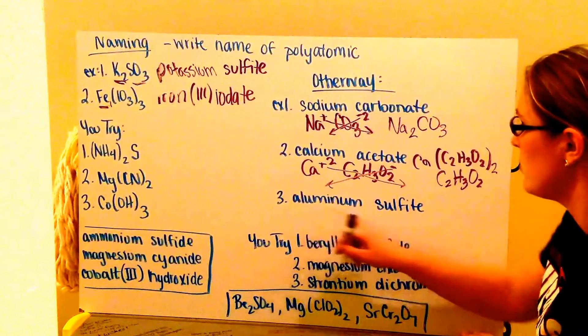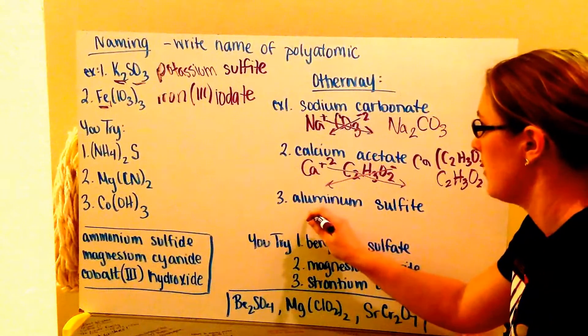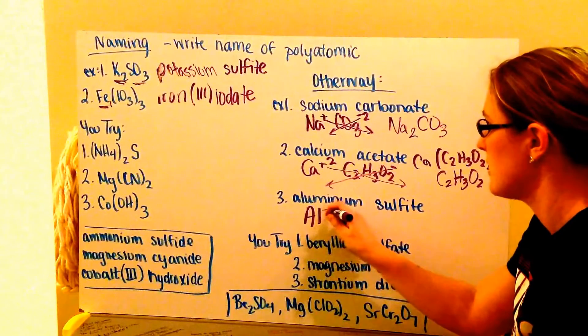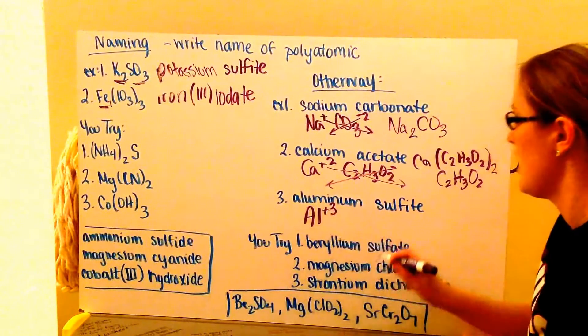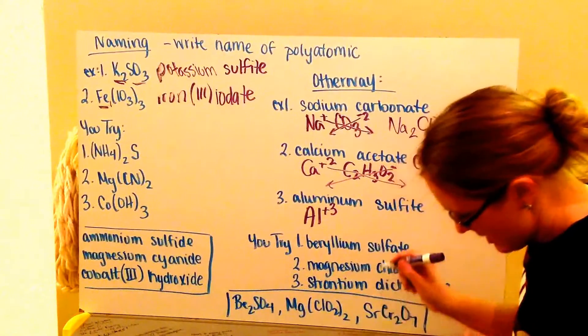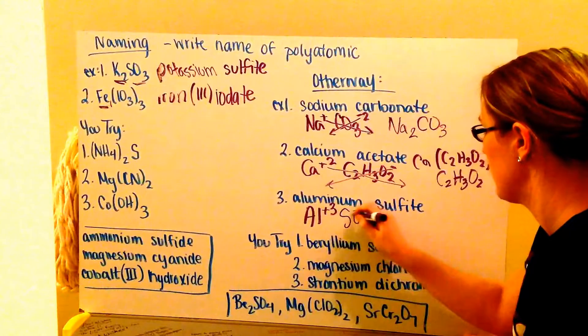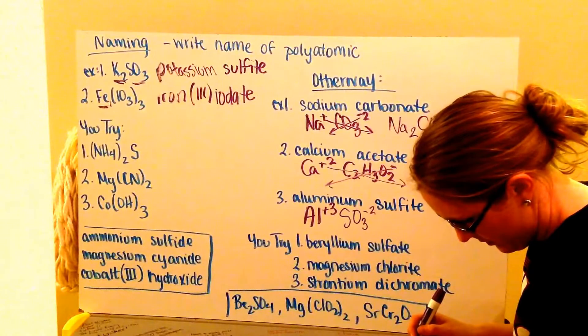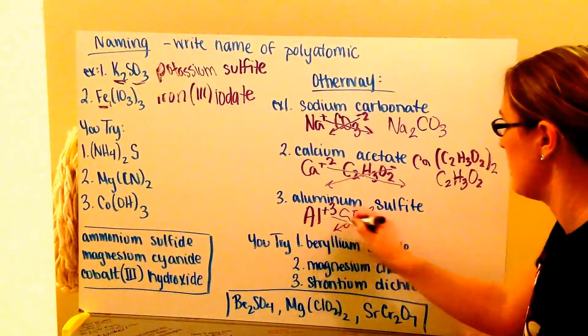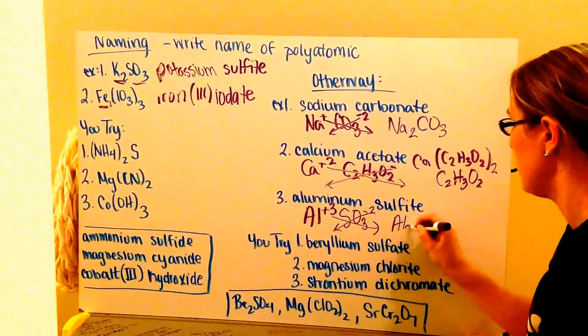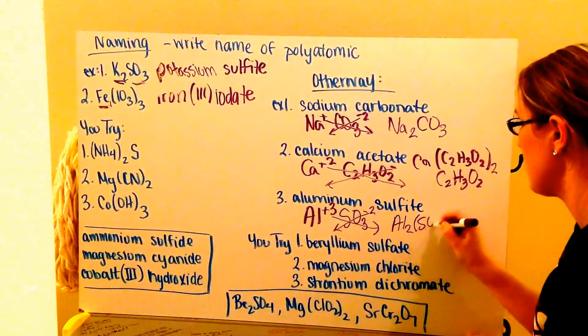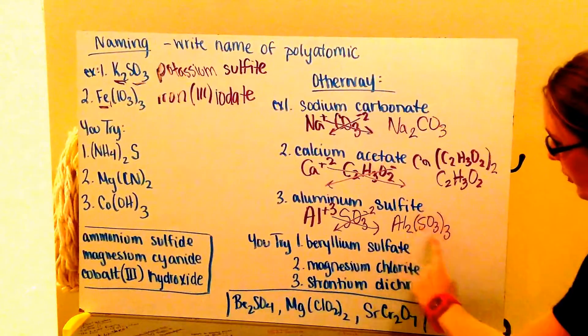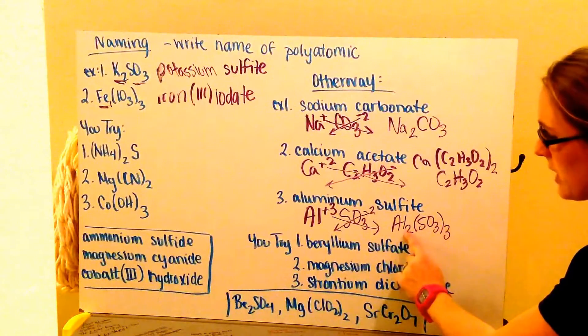Next I have aluminum sulfite. Aluminum I find on my periodic table. Al. And it's in group three. So it has a positive three charge. Then I have sulfite. Sulfite is SO3. And it has a negative two charge. I go ahead and crisscross them down. And I get Al2, parentheses, SO3, subscript 3. I get my parentheses saying I have three sulfite ions attached to my two aluminums.